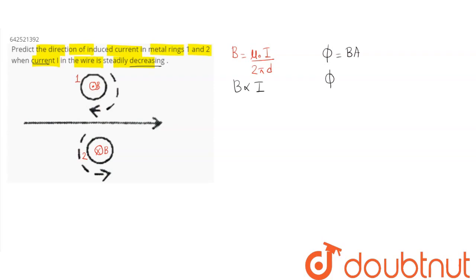Since in both the rings, the area vector is outside and magnetic field is also outside the plane of paper, the angle is 0°, so B·A·cos(0°) becomes B·A. Therefore, we can say magnetic flux is proportional to magnetic field.